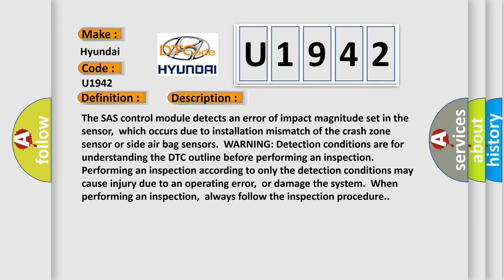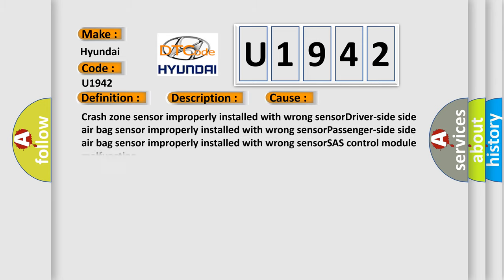The SRS control module detects an error of impact magnitude set in the sensor, which occurs due to installation mismatch of the crash zone sensor or side air bag sensors. Warning: detection conditions are for understanding the DTC outline before performing an inspection. Performing an inspection according to only the detection conditions may cause injury due to an operating error, or damage the system. Always follow the inspection procedure. This diagnostic error occurs most often in these cases: Crash Zone Sensor improperly installed with wrong sensor; Driver Side Air Bag Sensor improperly installed with wrong sensor; Passenger Side Air Bag Sensor improperly installed with wrong sensor; SAS Control Module malfunction.